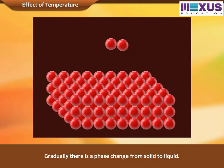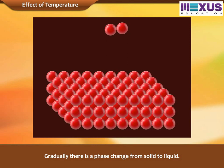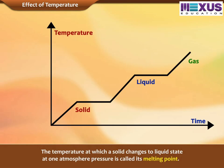Gradually, there is a phase change from solid to liquid. The temperature at which a solid changes to liquid state at one atmosphere pressure is called its melting point.